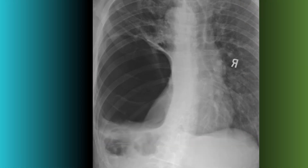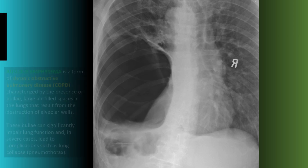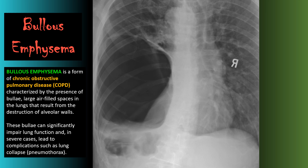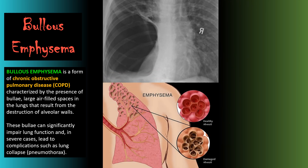On this frontal view of the chest, you should see a very large cyst-like lesion within the left lower lung field that looks devoid of vascular markings. This large cyst-like area of dead space is referred to as bullous emphysema — a form of chronic obstructive pulmonary disease. With bullous emphysema you can see these large air-filled spaces in the lungs that result from the destruction of the alveolar walls, which can lead to significant pulmonary issues.